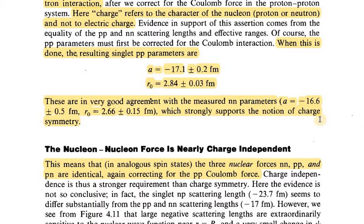For neutron-neutron we have a = -16.6 ± 0.5 fm, r₀ = 2.6 ± 0.15 fm, which strongly supports the notion of charge symmetry.